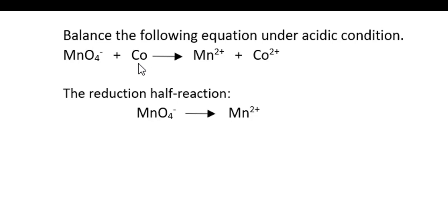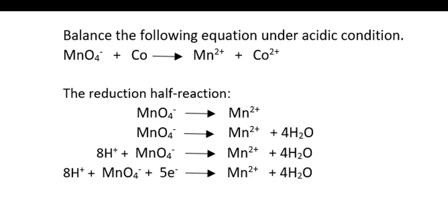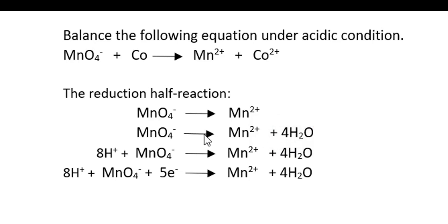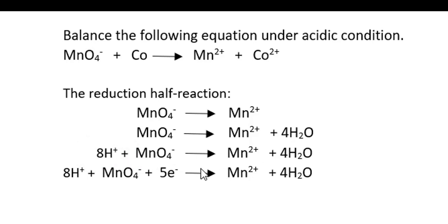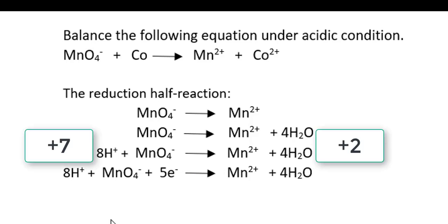You can verify that by looking at the oxidation state — cobalt is neutral on the left and 2+ on the right, meaning it lost electrons. Now we balance the reduction half reaction. There are four oxygens on the left and none on the right, so we add four waters to the right side. That gives eight hydrogens on the right, so we add eight H⁺ to the left. Now there is mass balance. The charge on the left is +7 and on the right is +2.